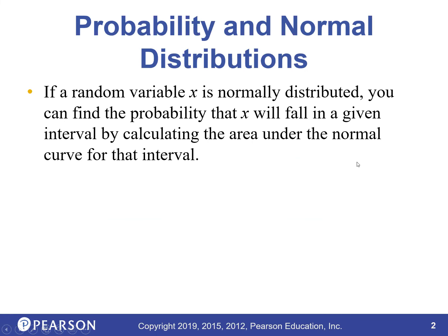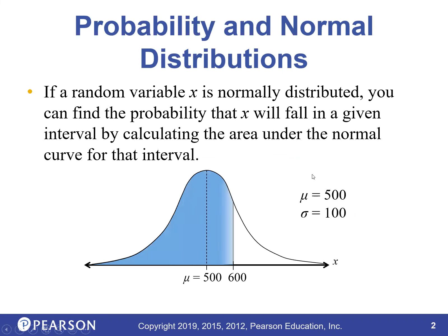A random variable called X that is normally distributed — you can find the probability that X will fall in a given interval by calculating the area underneath the normal curve. If the average is 500 and the standard deviation is 100, then 600 is one standard deviation away, which corresponds to a Z-score of one.